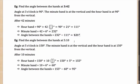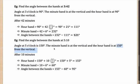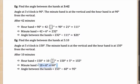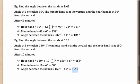Try another one: angle between the hands at 5:10. At 5 o'clock the angle is 30×5 = 150 degrees. In 10 minutes, the hour hand moves 10 × 0.5 = 5 degrees, reaching 155 degrees. The minute hand moves 10 × 6 = 60 degrees. The angle between them is 155 − 60 = 95 degrees. That is the answer.